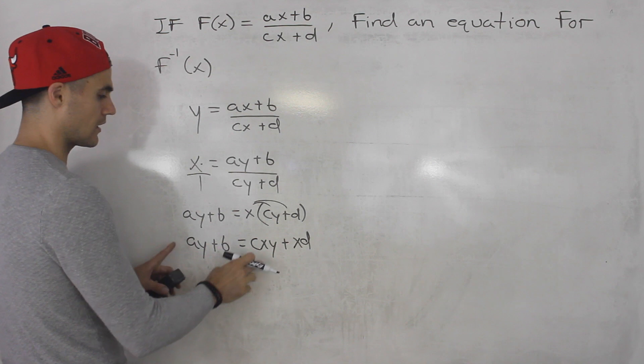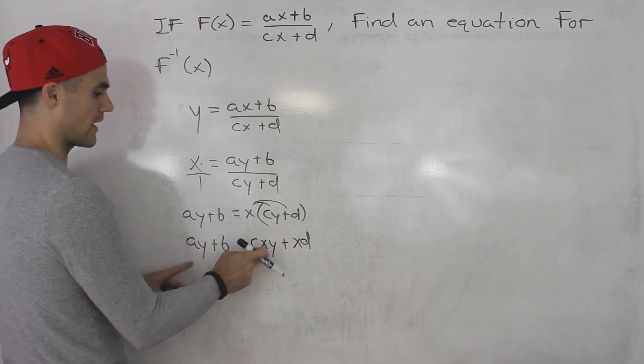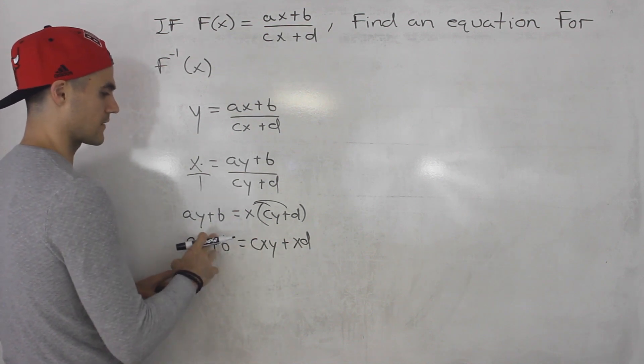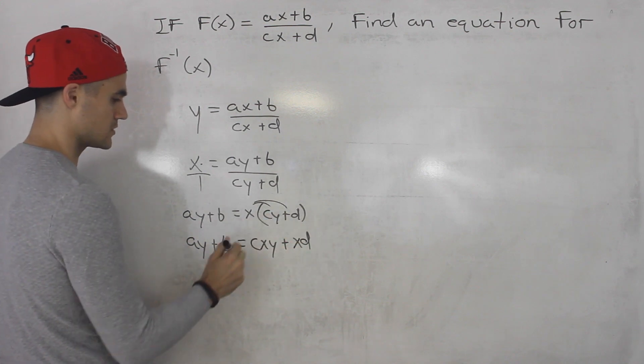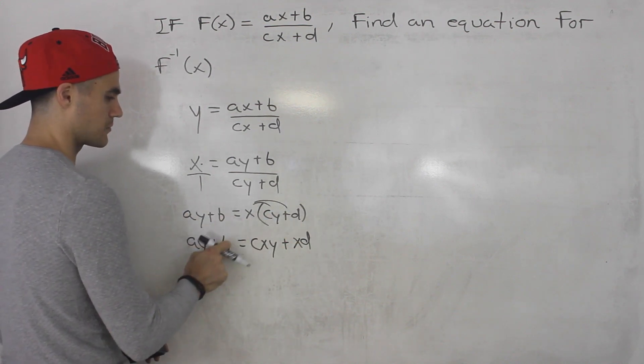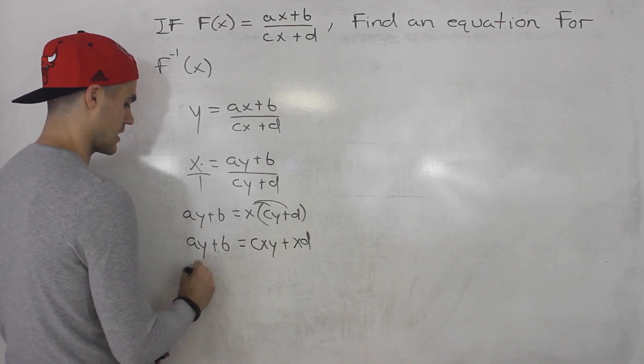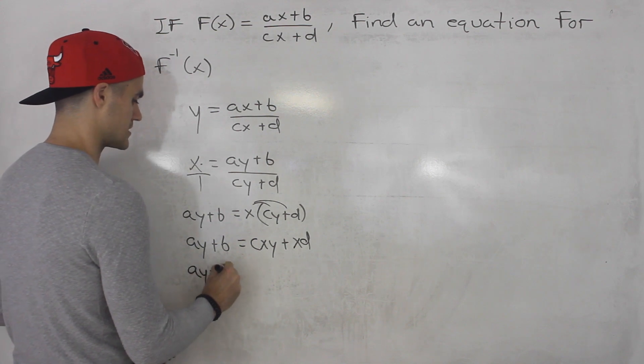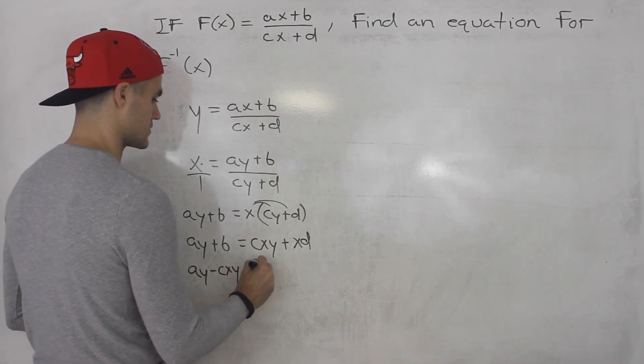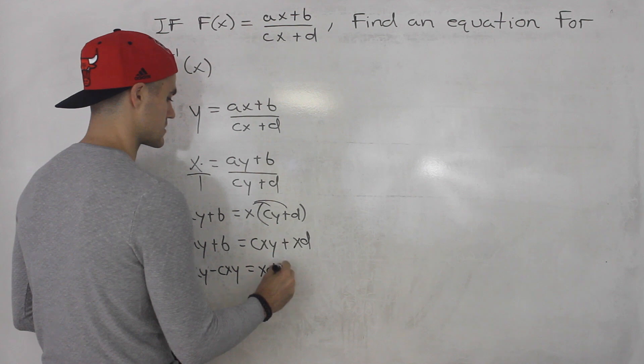Then what you want to do is you want to get all of the expressions that have a y attached to them on one side and then the rest on the other. So what I'm going to do is I'm going to bring the c x y over and I'm going to bring the b over. So basically I got a y minus c x y equals x d minus b.